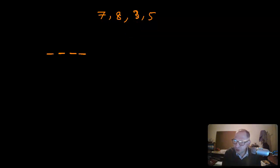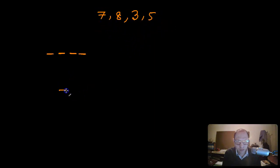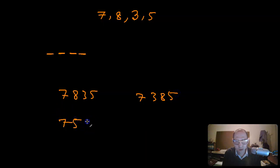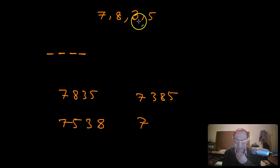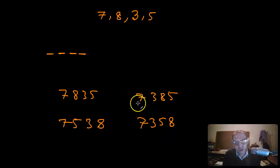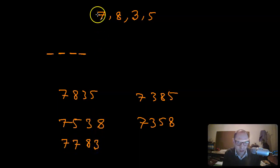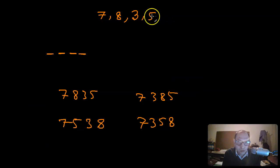Assuming that no digit is repeated, you can make a bunch of numbers - for example, seven eight three five, that's a possible number; seven three eight five is another; or seven five three eight. Since there is no repetition, seven seven eight three would not be a possible number because each digit is supposed to be used only once.